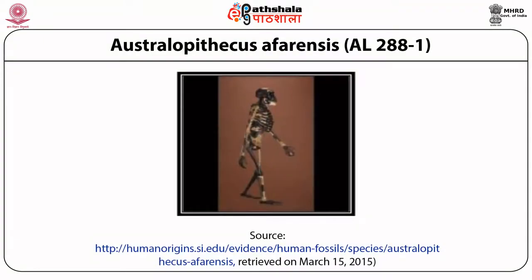Australopithecus afarensis. A number of fossils of this type were discovered between 1975 and 1991 by Johanson and Gray, Kimbel and others, from different places of East Africa like Hadar in Ethiopia and Laetoli in Tanzania. Of these fossil remains, the one discovered from Hadar is nicknamed Lucy, an adult female skeleton about 25 years old. Australopithecus afarensis existed between 3.9 and 3 million years ago.